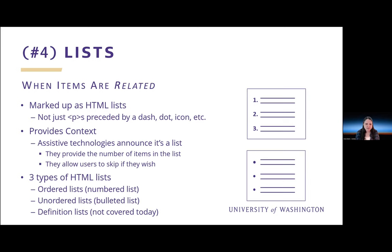There are three types of HTML lists: ordered list — a numbered list; unordered list — a bulleted list; and definition lists. Definition lists won't be covered today, but if you're using them, think about why. Are you using them correctly to display a list of terms, or are you using them for their visual appearance?